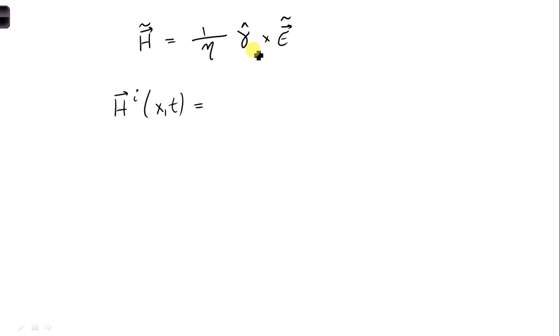And if we do gamma hat crossed with E, so gamma hat is the direction of propagation, so that's X hat, and this was in the Y hat direction.